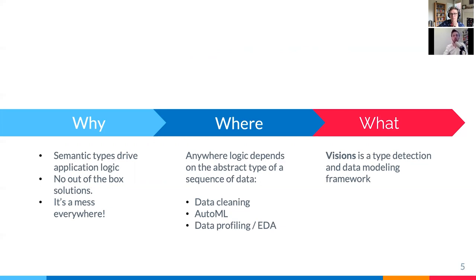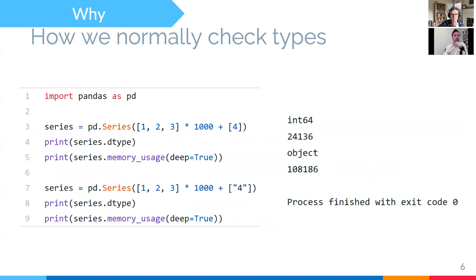And what we are talking about is visions, which is a framework that allows you to model the semantic data types and do type detection. So this example is in Pandas where you have a sequence of integers, one, two, three, and four. However, once you add one single string, four as a string, then the memory usage will increase because it's automatically coerced to an object. And we're talking about the kind of logic to prevent and solve these cases. Because this is what you would encounter in real life.